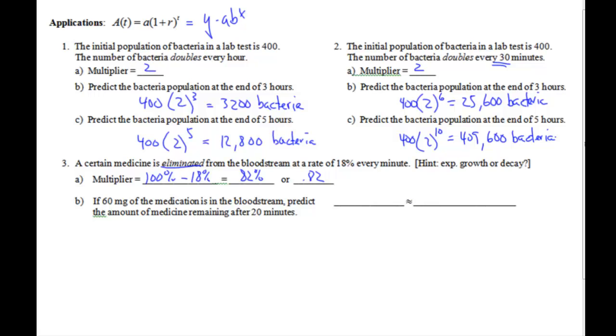So if we have 60 milligrams of medicine in the bloodstream, that's where we're starting with. So we have 60 milligrams here. Predict the amount of medicine remaining after 20 minutes. Well, what's the multiplier? The multiplier is how much we're retaining after every minute. So that's our 0.82. And it's losing at a rate of 18% every minute. So one minute times the 20 minutes means we're going to raise this to 20. Punch in your calculator. You should get 1.134 milligrams.